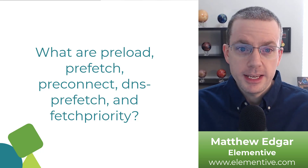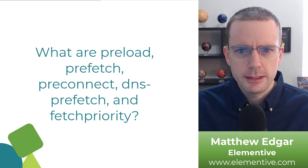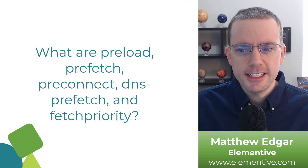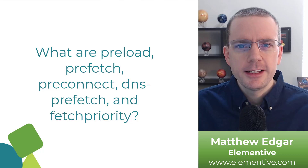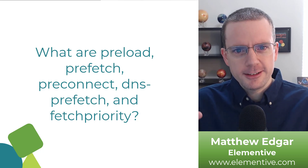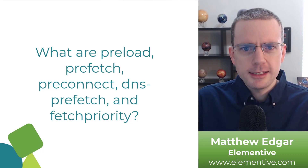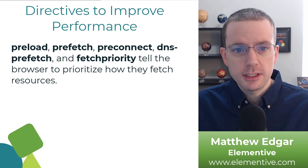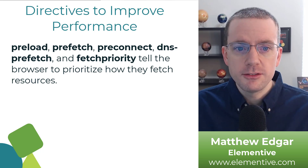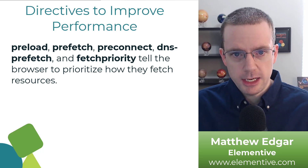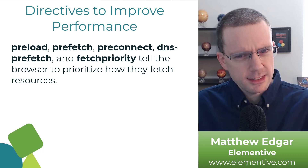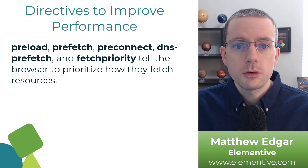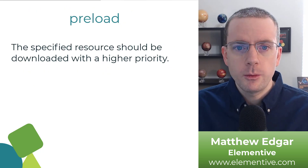What are preload, prefetch, preconnect, DNS prefetch, and fetch priority, and when should each of these be used? A lot of these get confused, but let's walk through each of these and sort out when you use each of these and how you should use each of these. So all of these are different directives that tell the browser to prioritize and fetch resources from your page, but they differ in what exactly they do and how they work. Let's go through each one by one, starting out with preload.